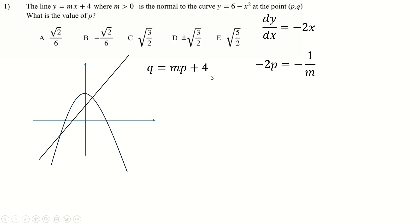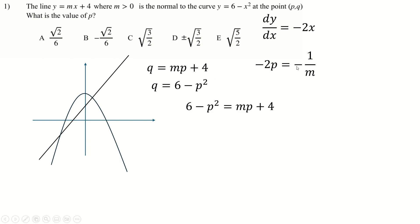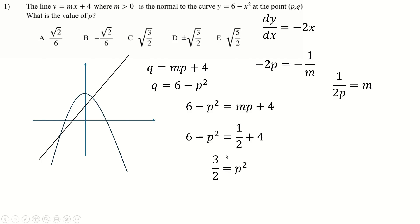We can find another equation by putting point PQ into both the line and the curve, since they both exist at that point. That gives us Q in terms of both, so now we have three equations and three unknowns. Setting the two expressions for Q equal gives us something in M and P. We rearrange for M, substitute in, the P's cancel, and we solve for P squared.